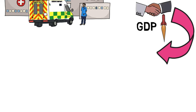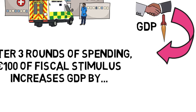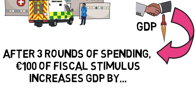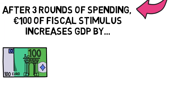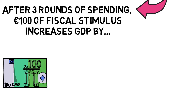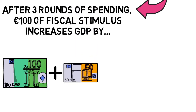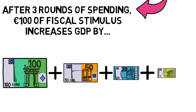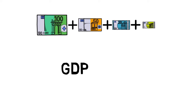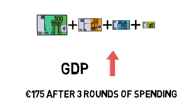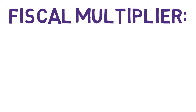So in our scenario, what has come to pass after three rounds of spending of 100 euro of fiscal stimulus: GDP increases by the initial 100 euro on construction, then the extra 50 which went to the salesperson, and he had to spend 50 percent of that — 25 euro — on healthcare costs. This means the fiscal stimulus doesn't just create 100 euro; it creates 175 euro after three rounds of spending.